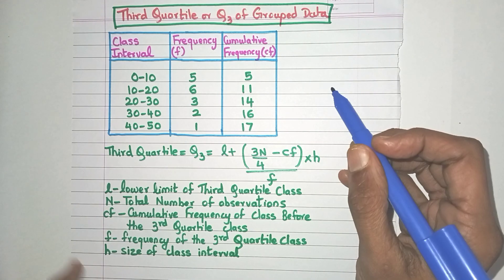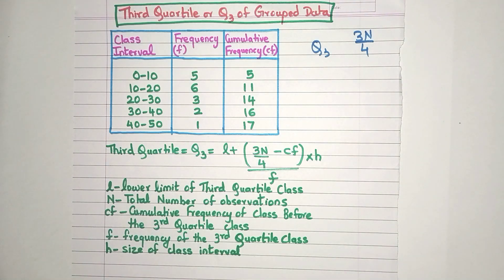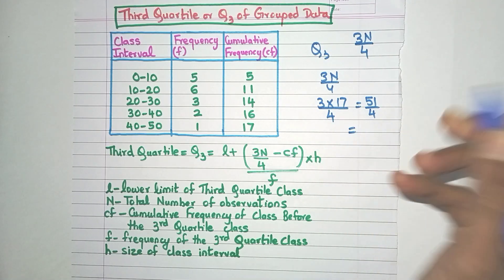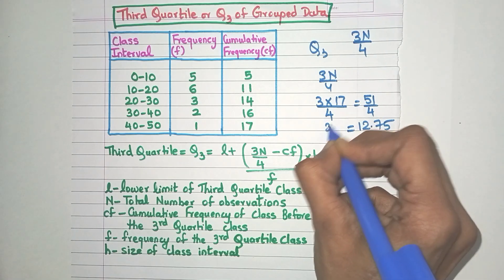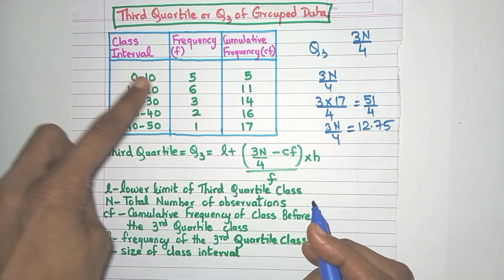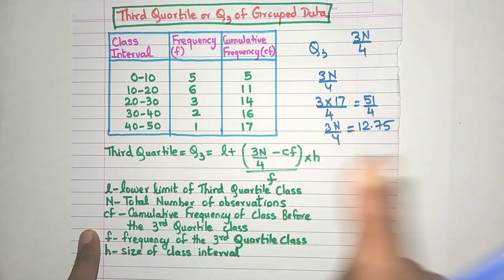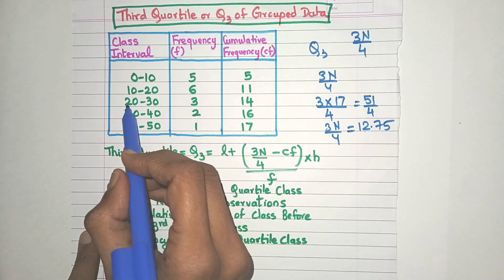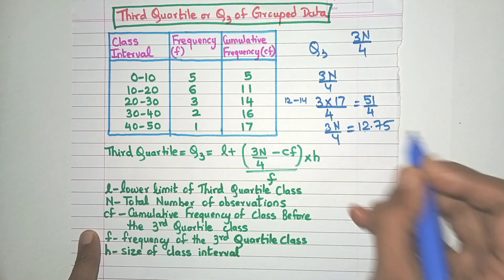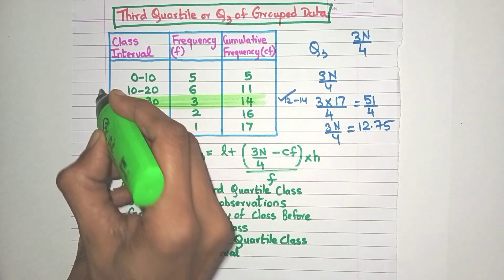Now let's find the third quartile. Q3 is the observation at the 3n/4th position. So 3 × 17 / 4 = 51/4 = 12.75. Q3 lies at the 12.75th observation. The 0 to 10 class has CF 5, so 12.75 is not there. The 10 to 20 class has CF 11 (observations 6–11), so 12.75 is not there either. The 20 to 30 class has CF 14 (observations 12–14), so 12.75 lies here — this is the third quartile class.